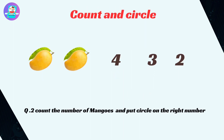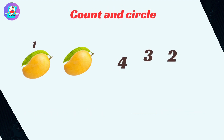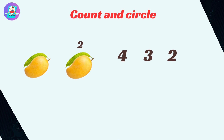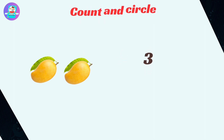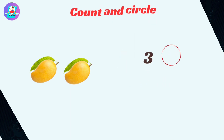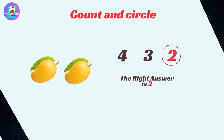Okay next. Count the number of mangoes and put circle on the right number. Let's count the number of mangoes here. 1, 2. Okay here the number of mangoes are 2, then 2 will be the correct answer. So circle on 2 which is correct answer.